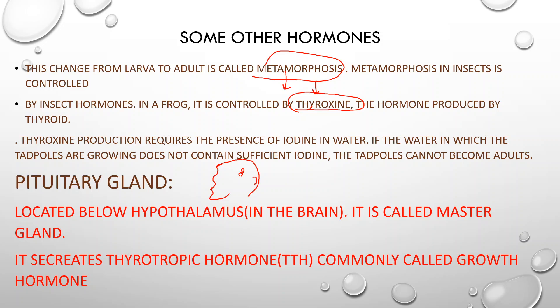Why is the pituitary gland called the master gland? Because it controls the functions of the other endocrine glands. You should remember that the functioning of our other glands is controlled by the pituitary gland.